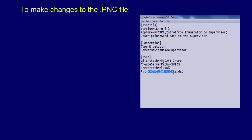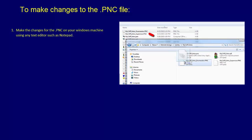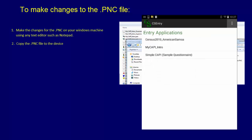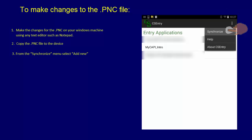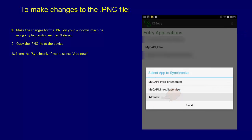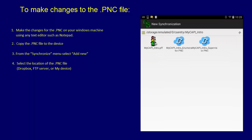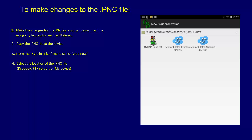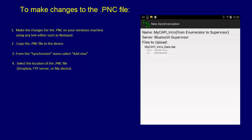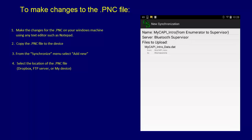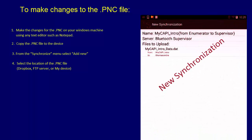To make changes to the .pnc file, make the changes on your Windows machine using any text editor such as Notepad. Copy the .pnc file to the device. From the Synchronize menu, select Add New. Select the location of the .pnc file — Dropbox, FTP server, or My Device. Then navigate to and select the .pnc file. If the synchronization does not exist, CS Pro creates a new synchronization. If the synchronization already exists, CS Pro will overwrite the old synchronization with the new synchronization.